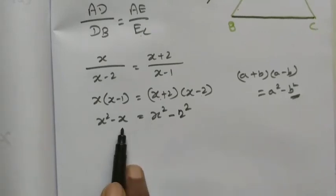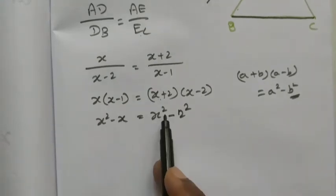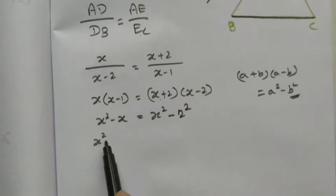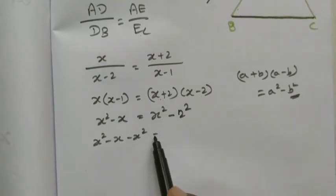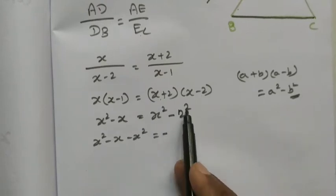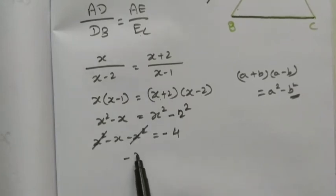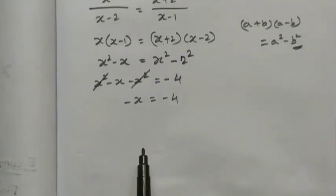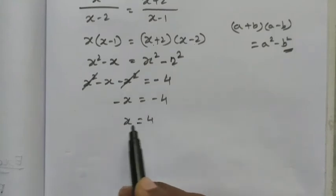We take x² to the other side. So x² minus x equals x² minus 4. The x² terms cancel: minus x equals minus 4. Multiplying both sides by minus 1, we get x equals 4.